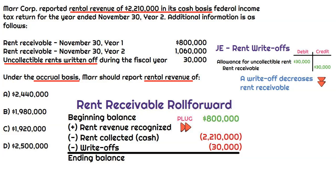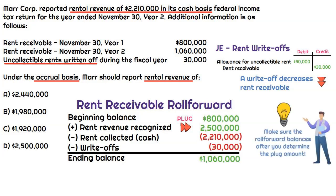We get down to our ending rent receivable balance of $1,060,000, which the question gives us. That's the full roll forward for the rent receivable balance. When we factor in what's the plug, it's going to be $2,500,000 — that's the only number that causes this roll forward to balance. After you plug in your number, see if it balances — that's how you can check your answer. So the correct answer is $2,500,000, which is the amount of rental revenue under the accrual basis for MAR.